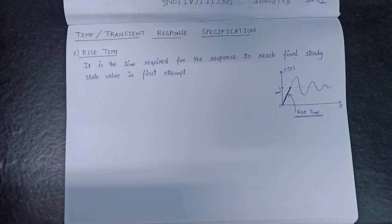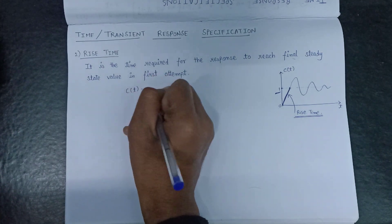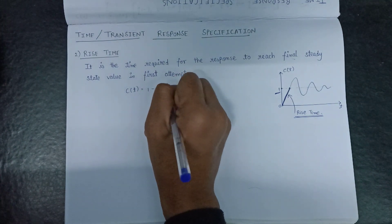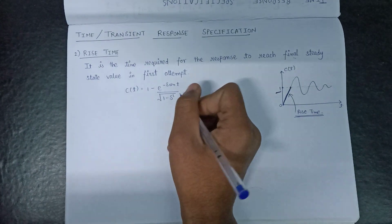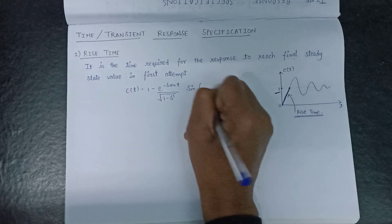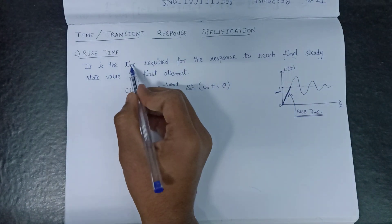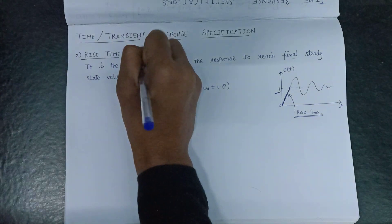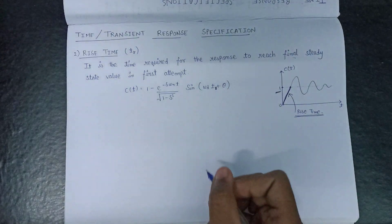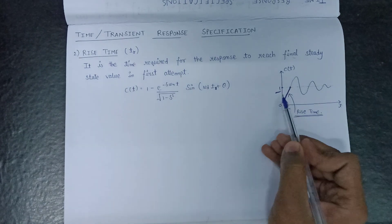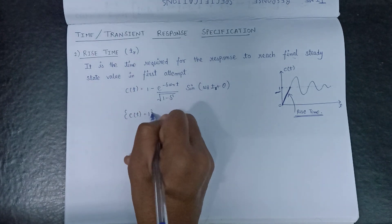Since in the derivation of the underdamped system, we have derived a value of c, given as: c equals 1 minus e to the power of minus delta omega-n times t, over the square root of 1 minus delta squared, multiplied by sin of (omega_d times t plus theta). The rise time is denoted by the symbol t_r. That's why we replace t with t_r, and since the final steady state value equals 1, we replace c(t) with 1 in this expression.